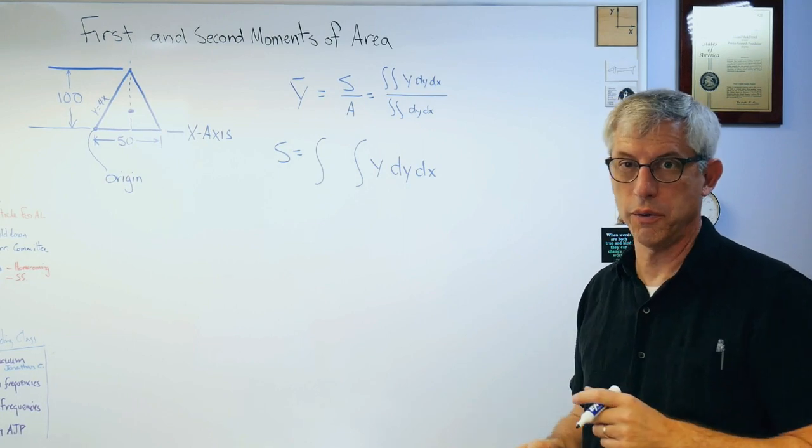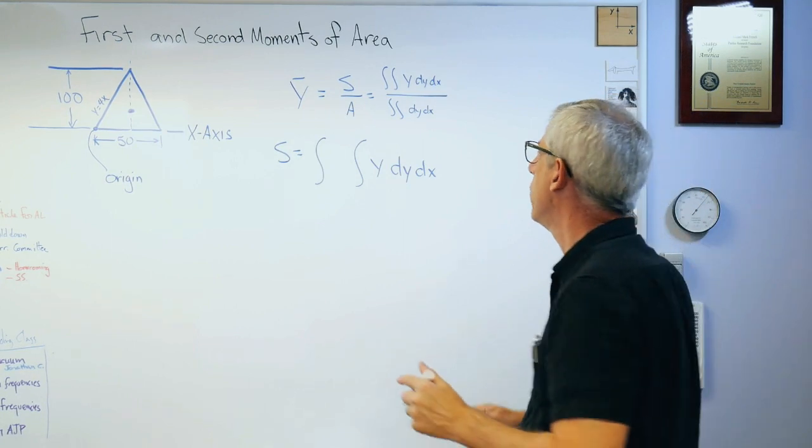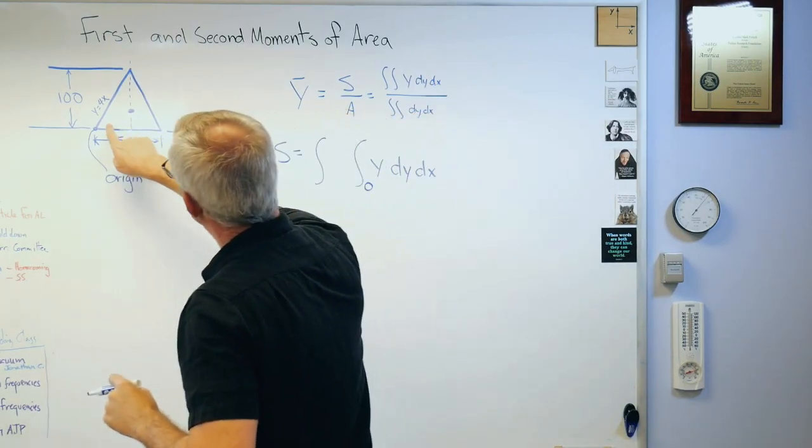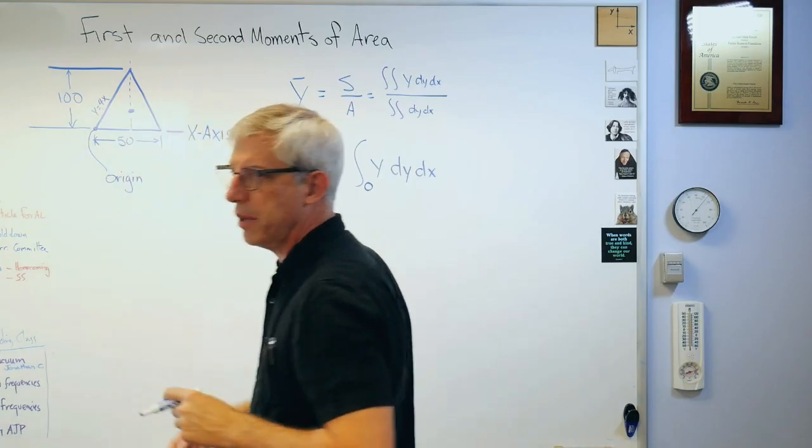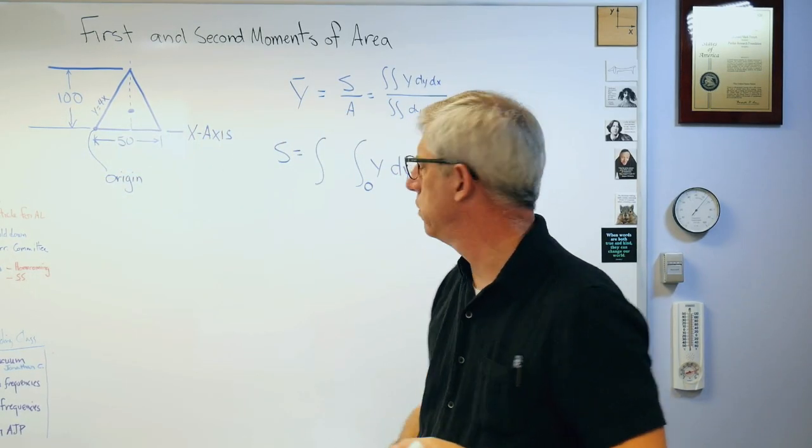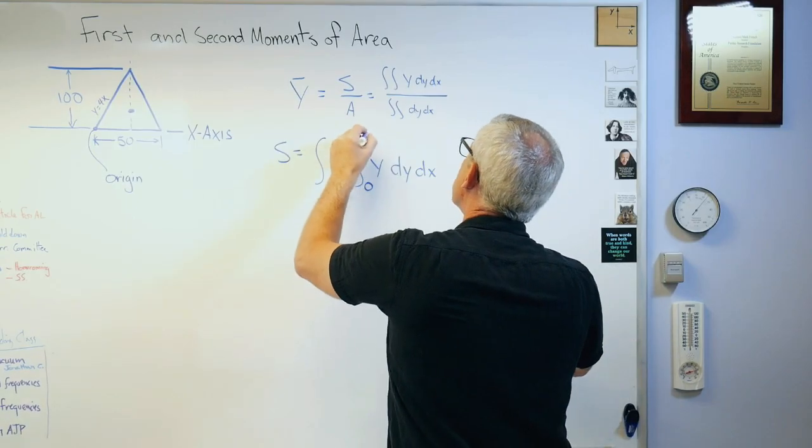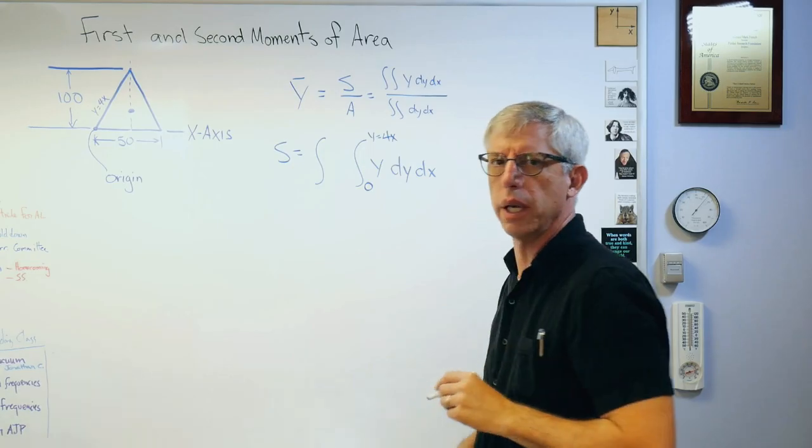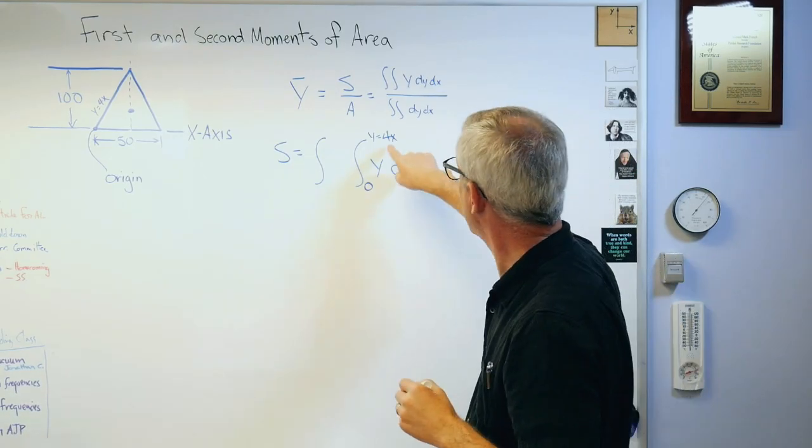Absolutely fine. There's no reason not to do that. You can do them in reverse order if you like, math doesn't care. So if I start at zero, which I'm going to, but I don't know the upper integration limit. It's not a number now, it's a function. Is that okay? Can I do this?